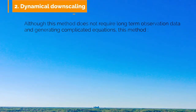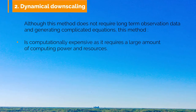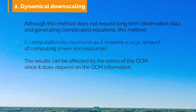Dynamical downscaling also has some disadvantages. First, the method is computationally expensive, as it requires a large amount of computing power and resources. Second, the results from the dynamical downscaling can be affected by the errors of the GCM, since it does depend on the GCM information being reliable to downscale the required information. If the GCM has errors in a particular region of interest, those errors can affect the downscaling accuracy.